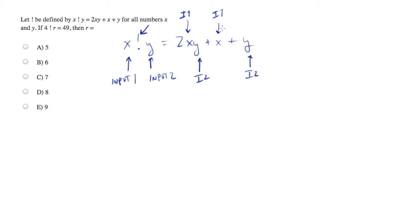And this whole thing evaluates to some output, which will be whatever's on the other side of the equal sign. So for example, in our case, what we're given is 4 exclamation point r equals 49, and they're asking us to solve, so find r.